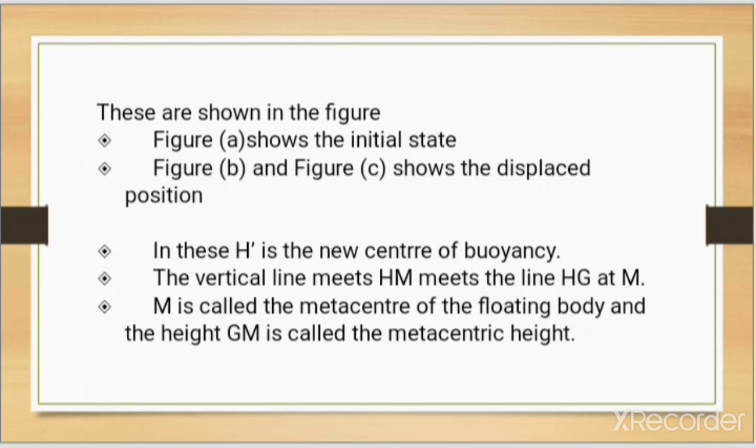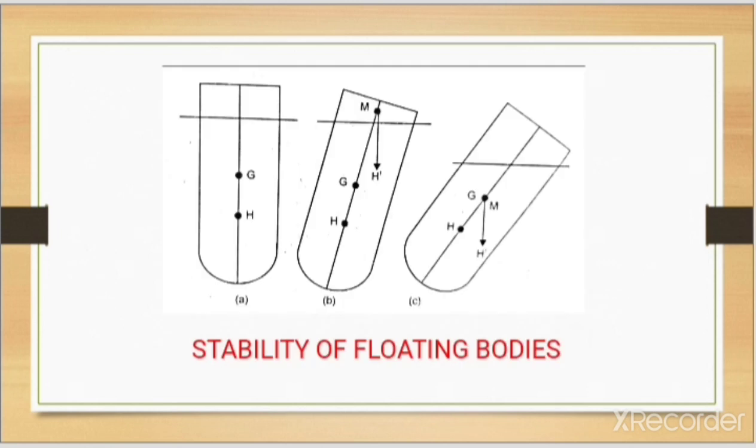These are shown in the figure. Figure A shows the initial state. Figure B and Figure C show the displaced position. In this, H prime is the new center of buoyancy. The vertical line HM meets the line HG at M. M is called the metacenter of the floating body and the height GM is called the metacentric height.